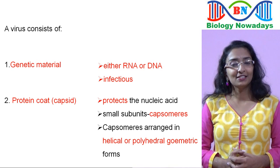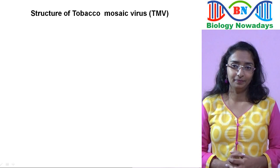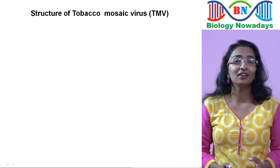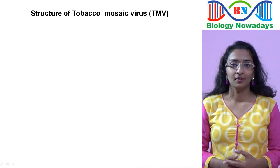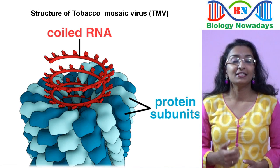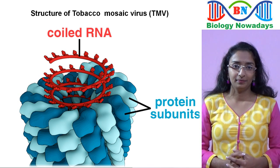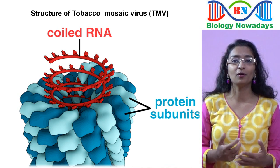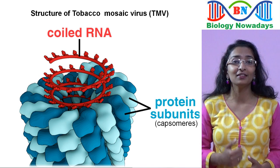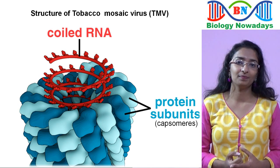Let's see the structure of the Tobacco Mosaic Virus, or TMV. TMV was the first virus ever to be discovered. It has a rod-like appearance, and its genetic material is single-stranded RNA. Its protein coat or capsid is made up of 2,130 capsomers arranged in a helical fashion.